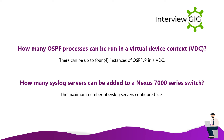How many OSPF processes can be run in a VDC? There can be up to 4 instances of OSPFv2 in a VDC. How many syslog servers can be added to a Nexus 7000 series switch? The maximum number of syslog servers that can be configured is 3.